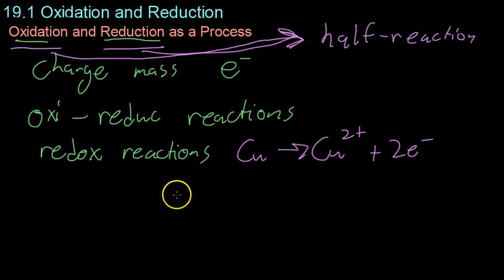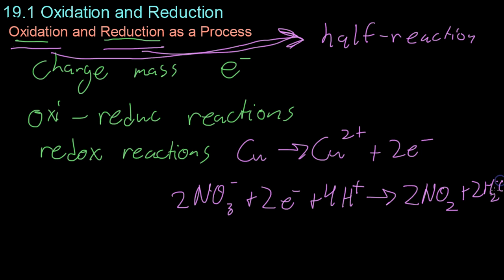Likewise, if we were to take these two electrons and add them to nitrate, so if we have NO3 minus plus two electrons plus four protons, basically we're assuming this happens in solution so there can be free protons floating about in the solution of water. Here we have the water itself. Basically, this would be the reduction reaction because you have your electrons floating about as a reactant.